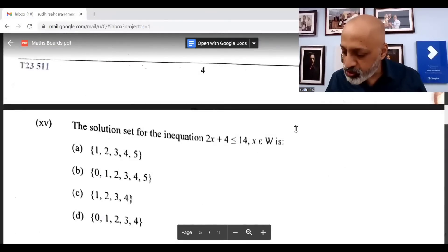The fifteenth and the last question of the MCQs, the correct option is B: {0, 1, 2, 3, 4, 5}.